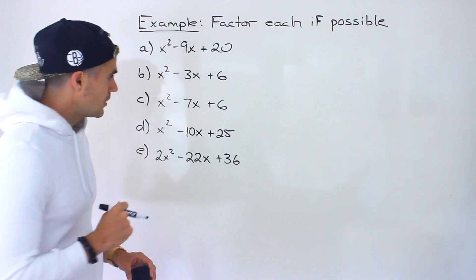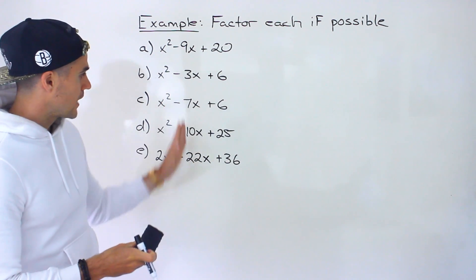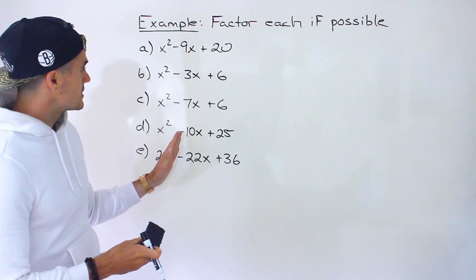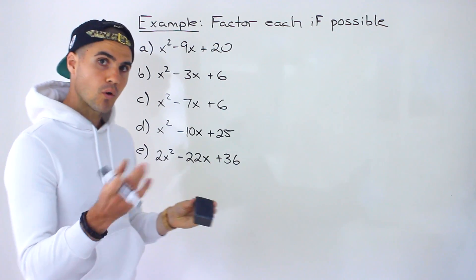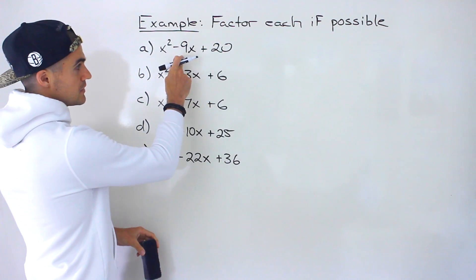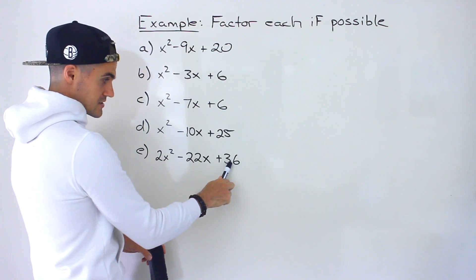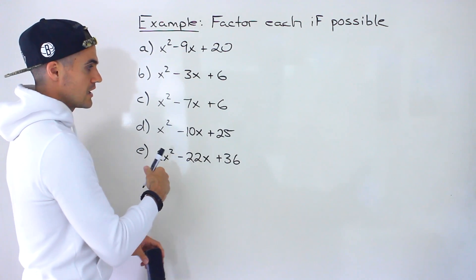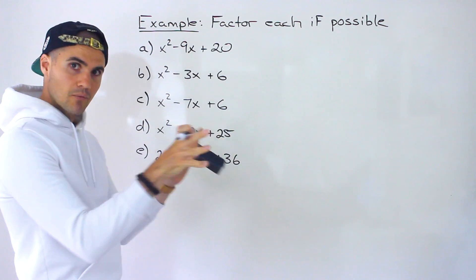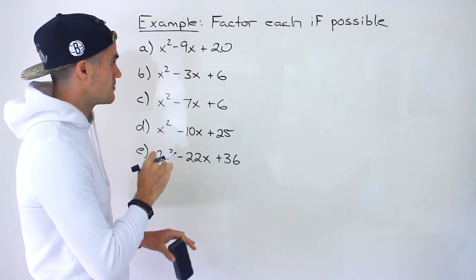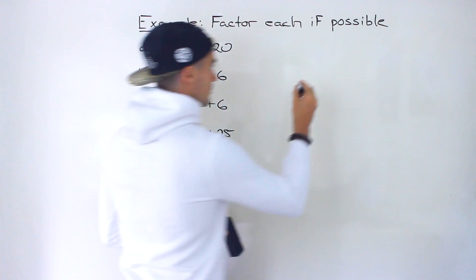Moving on, notice that compared to the previous video we have quadratics again, but in this particular case all of the B values are negative and all of the C values are positive. Before, we were working with positive B values and positive C values. The process is still exactly the same, but the two numbers we're going to find — those that multiply to A·C and add up to B — the signs are going to be different. They're actually both going to be negative values.